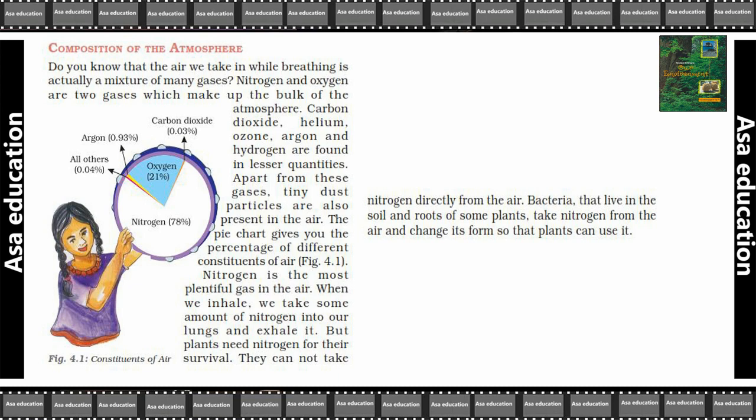The pie chart gives you the percentage of the different constituents of air. Ab yeh joh pie chart diya hai, is se aap ko pata chal jayega ki hamare atmosphere mein kis maatra mein kitni cheezain maujud hain. Nitrogen is the most plentiful gas in the air. Nitrogen sab se zyada gas rehti hai air ke andar.